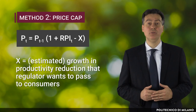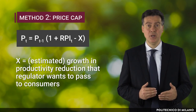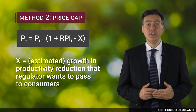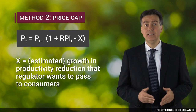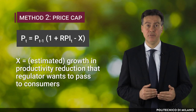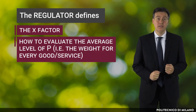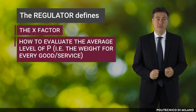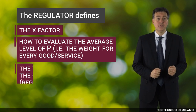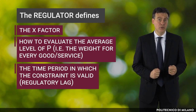The estimated growth in productivity, x, is based on an estimation of productivity change by the regulator, and represents the cost reduction that the regulator wants to pass to consumers due to the expected productivity increase. In practice, the regulator defines the x-factor and, in a multiproduct setting, how to evaluate the average price level. Additionally, the regulator sets the time period in which the constraint is valid — the so-called regulatory lag.